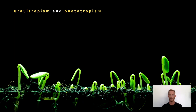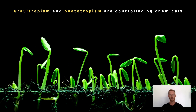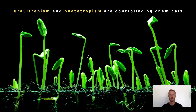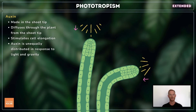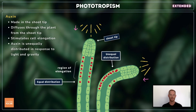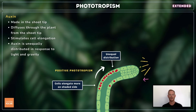That's everything for core, so we'll move on to the extended content. The growth responses of plants to light and gravity are controlled by chemicals. One such chemical is called auxin. It's produced in the tips of actively growing shoots and moves by diffusion to the regions of extension, where it stimulates cell elongation or growth. Auxin is unequally distributed in the shoot in response to light and gravity. In the case of phototropism, if a plant is exposed to light from one side, auxins are either destroyed on that side or they move from the light side to the shaded side. This unequal distribution means that the cells elongate more on the shaded side, causing the stem to bend towards the light.